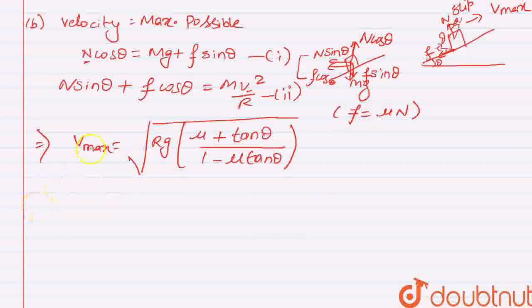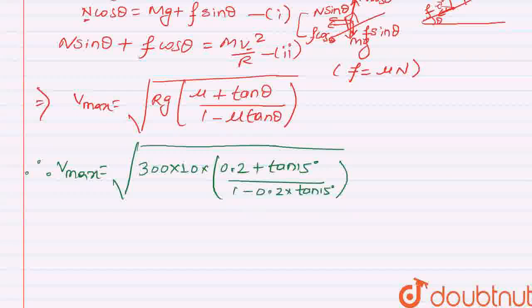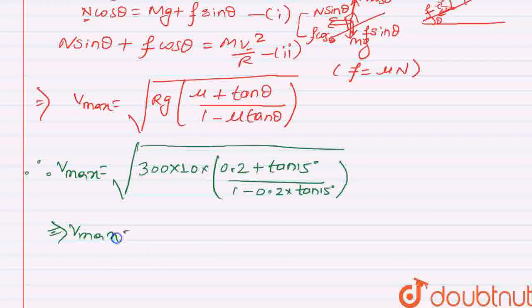So here, putting the value will get, therefore, Vmax will get as root under R as 300, G as 10 into mu given is 0.2. So 0.2 plus tan 15 upon 1 minus 0.2 into tan 15 degree. After evaluating this, we'll get Vmax as 38.19 meter per second. So this is the velocity max.